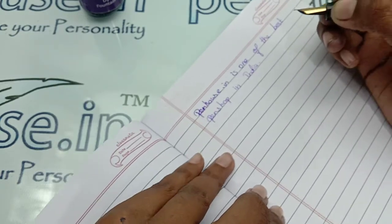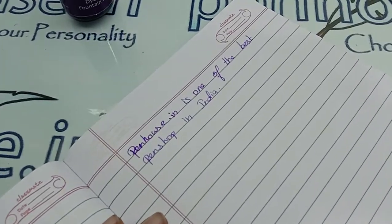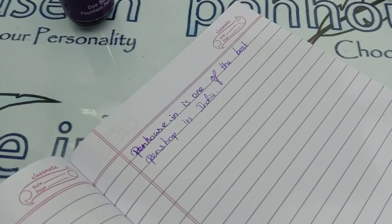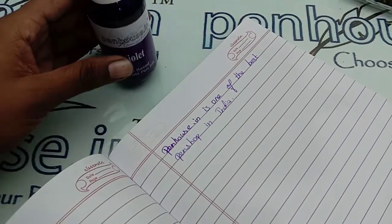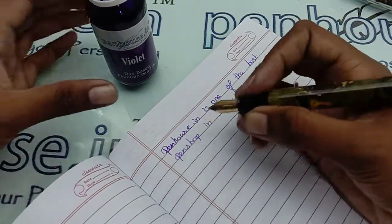There is an equal flow. The color I have used is Penhouse Violet ink, which is giving a very good view to this writing.